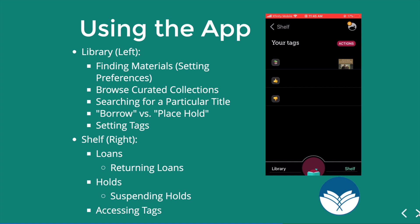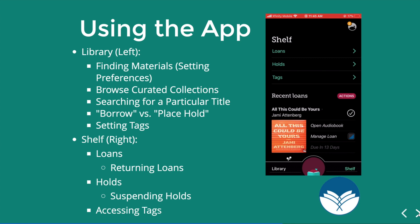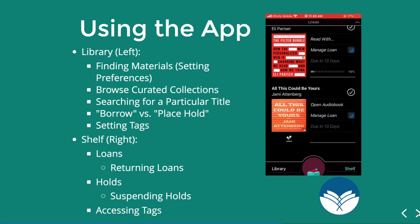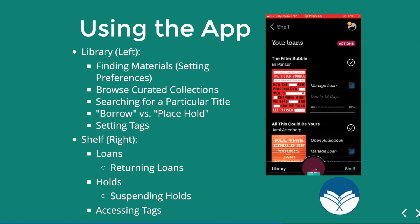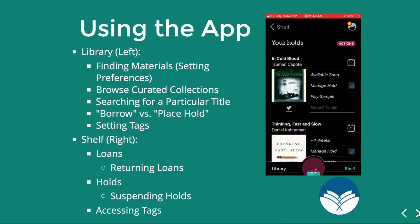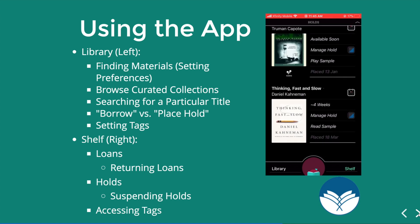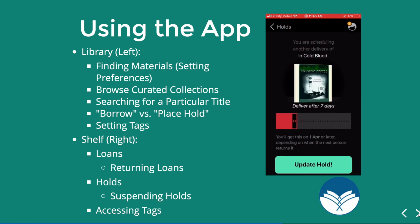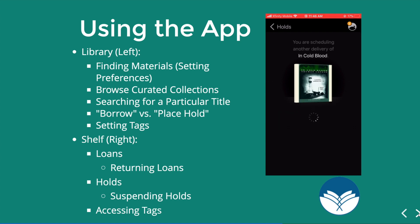On the shelf you can see your loans and your holds. Your tags are accessible there, and your loans show the things currently checked out to you — for example I have The Filter Bubble in book format and All This Could Be Yours in audiobook format. Under holds I have In Cold Blood audiobook and Thinking Fast and Slow book. If I'm not ready for something I can hit manage hold and either cancel it or deliver it later, which suspends the hold. I can select a number of days and hit update hold.